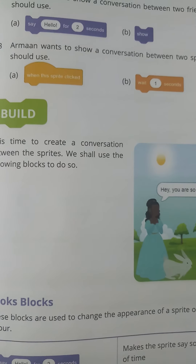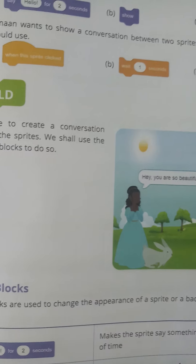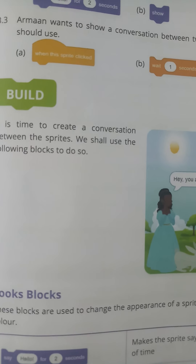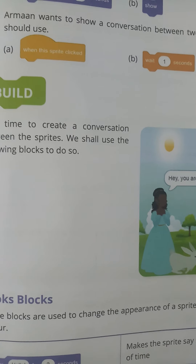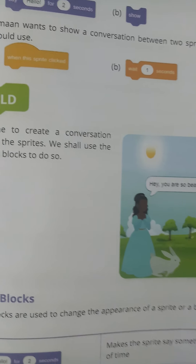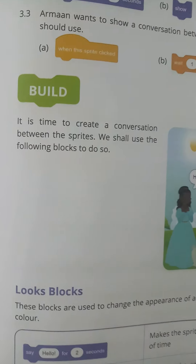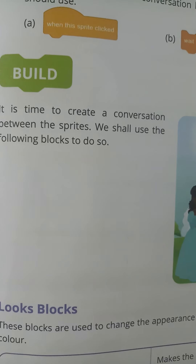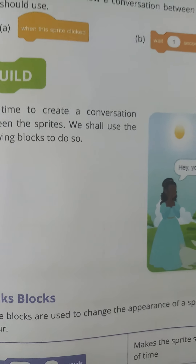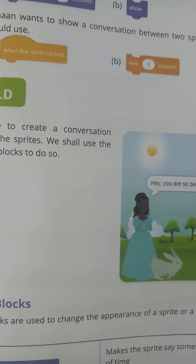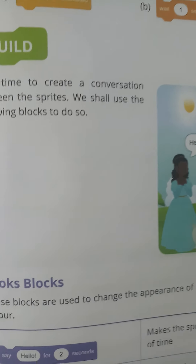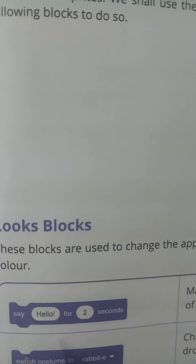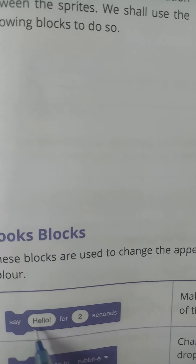Looks blocks are used to change the appearance of a sprite or a backdrop — that is, to change the appearance of a character or a background. These blocks are purple in color.